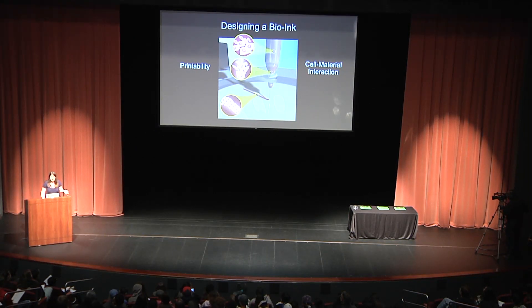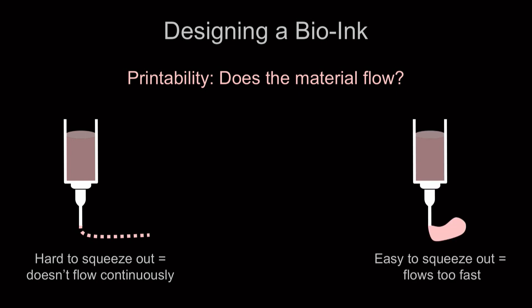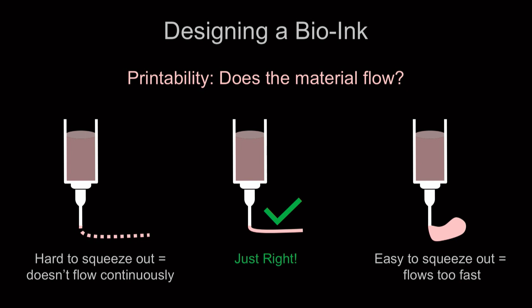Monica just told you about a bunch of different types of biomaterials we can use for bioprinting. You might wonder: how do we choose which one? It depends on what you're printing — modeling the blood-brain barrier requires different materials than modeling the liver or heart. When designing a bio-ink for your application, there are two main considerations: printability and cell-material interactions. Printability asks: does the material flow? Some materials are hard to squeeze out. Some flow too fast and end up in a blob. Some are just right and print exactly the way you want.